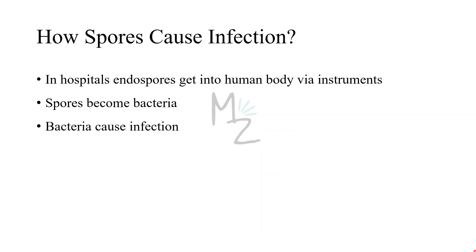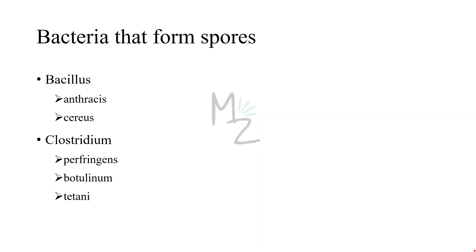How spores cause infection: in hospitals, endospores enter the human body via instruments like catheters or endoscopes. Inside the human body, the spore finds favorable conditions — proper temperature and proper nutrition — converts back into bacteria, and bacteria cause infection. Which bacteria are responsible for forming spores? Just a few gram-positive bacteria: Bacillus, with its two species anthracis and cereus, and Clostridium, which has four species total but three responsible for forming spores — perfringens, botulinum, and tetani. Videos on Bacillus and Clostridium are available, so be sure to check them out.